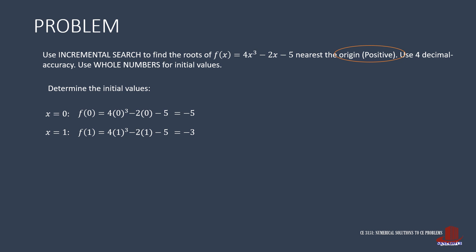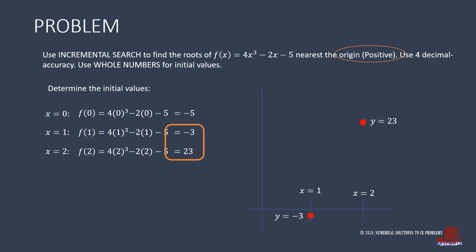Our goal is to look for the x-intercept, where y equals 0. Having another negative means that we haven't crossed the x-axis yet. Trying x equal to 2 makes the function 4 times 2 cubed minus 2 times 2 minus 5, which gives positive 23. The jump from negative to positive means that the curve has crossed the x-axis. From the Cartesian plane, the first point is at x equal to 1 with y as negative 3, and at x equal to 2, y becomes 23. Connecting these two points, there is definitely a root in this interval.